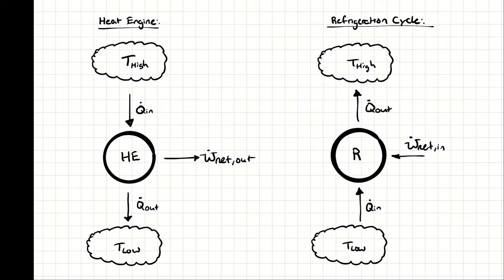And just like how we can take work and pump water back up the hill, in this analogy, we can take work and push heat back to a high temperature. That thermodynamic cycle is called a refrigeration cycle. We are consuming work to push heat in a direction that it does not naturally want to go.